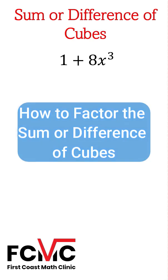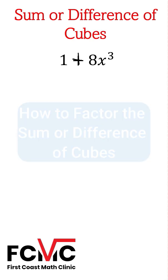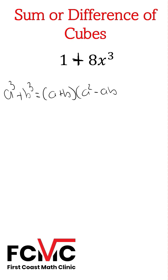How do we factor the sum or difference of cubes? We've got the sum of cubes here, so we can use our rule: a³ + b³ equals (a + b)(a² - ab + b²).